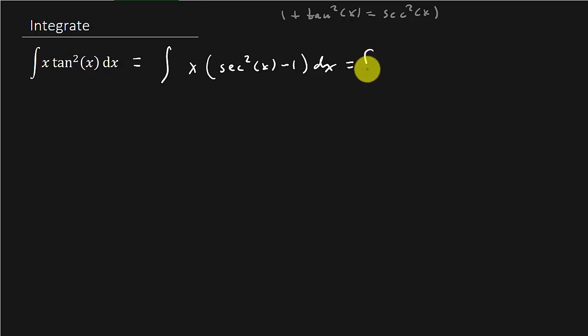And so now I'm going to get x secant squared x minus x dx. I just distribute the x. And so this is going to give us the integral of x secant squared x dx minus the integral of x dx. I'm just going to split that up into two integrals, because I know how to integrate x. That's just one half x squared, we know that.